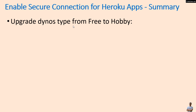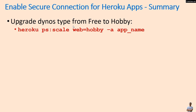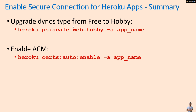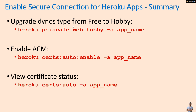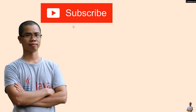To sum up the main steps: first, upgrade the dyno type from free to hobby using the 'heroku ps:resize' command. Then enable automatic certificate management using 'heroku certs:auto:enable'. Finally, view the certificate status using 'heroku certs:auto'. It's very simple. I hope you found this video helpful — please subscribe, like, comment, and share. Thanks for watching.